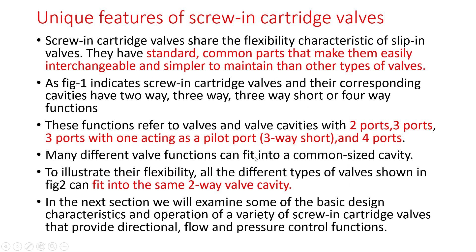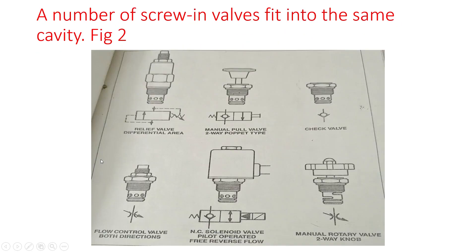Many different valve functions can fit into a common size cavity. As figure 2 illustrates, all different types of valves can fit into the same two-way valve cavity. These include a manual two-way poppet type valve, a check valve, a flow control valve for both directions, a normally closed pilot-operated valve with free reverse flow, and a manual rotary two-way knob valve.